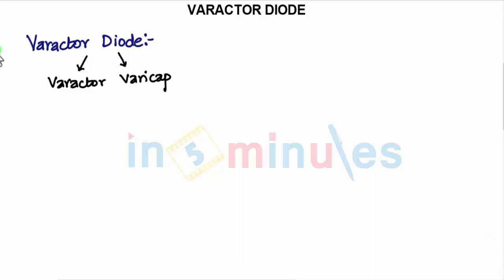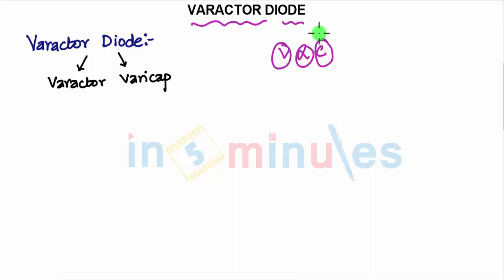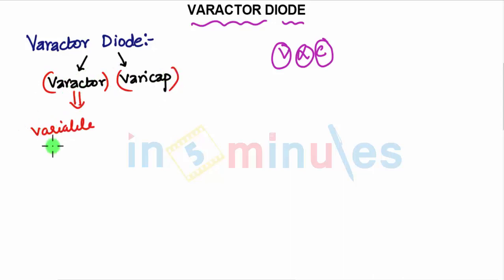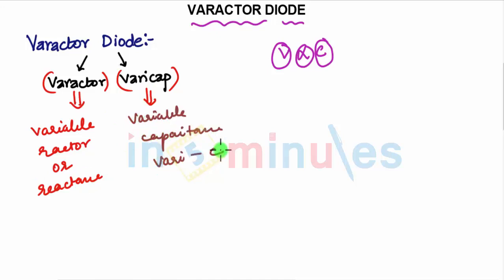Welcome to this video on varactor diodes. Varactor diodes are used for radio frequency applications and are able to provide a variable capacitance — as voltage changes, the value of capacitance will change. This is used for tuning circuits, including radio frequency oscillators and filters. Varactor diodes are also called varactors or varicaps. Varactor means variable reactor or reactance, and varicap means variable capacitance.